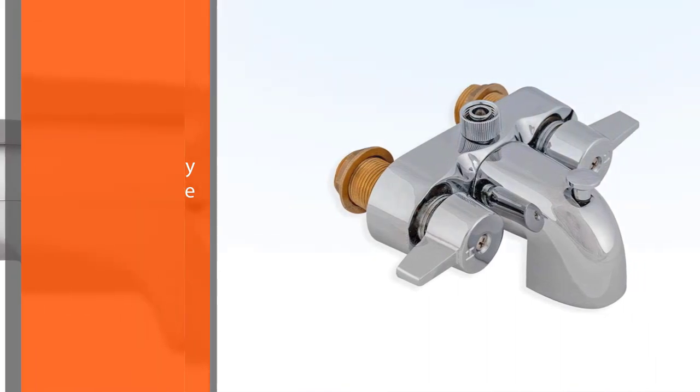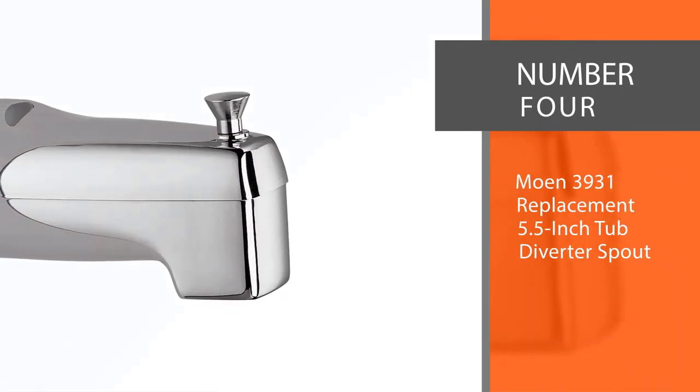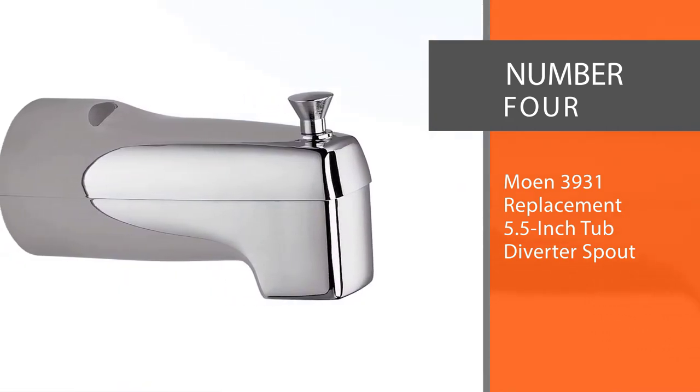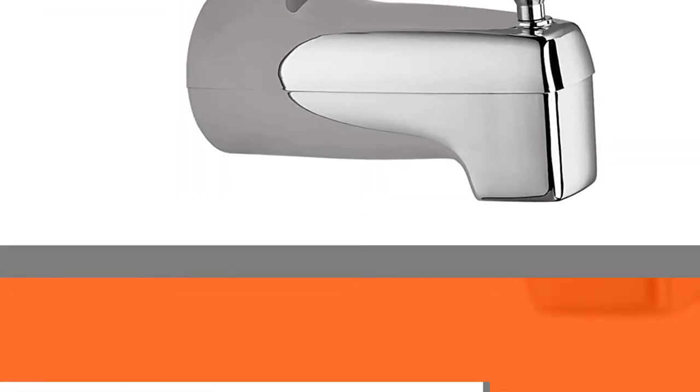Number four: Mohan 3931 Replacement 5.5 Inch Tub Diverter Spout. It features a reflective chrome finish that is good-looking and very easy to clean.